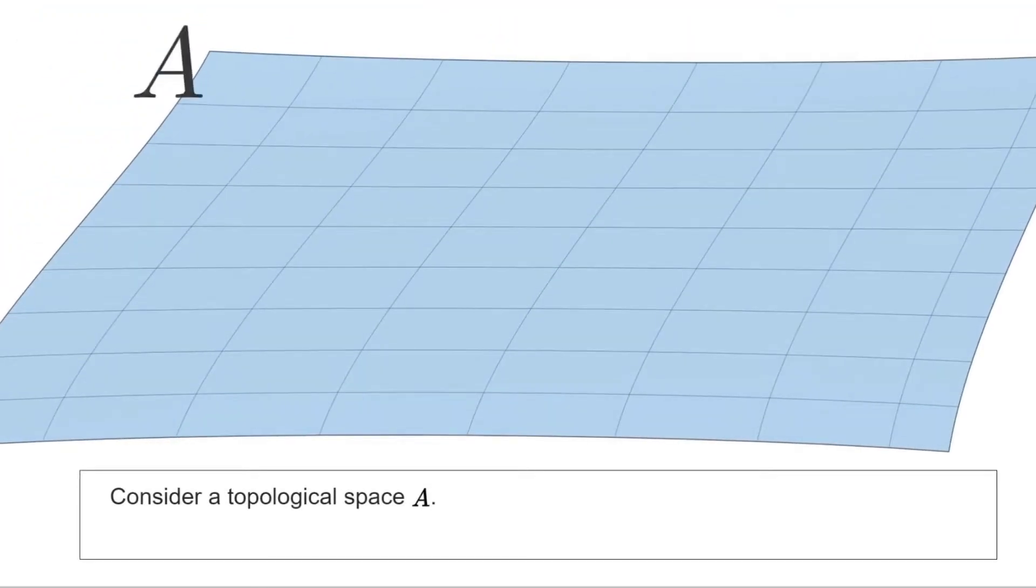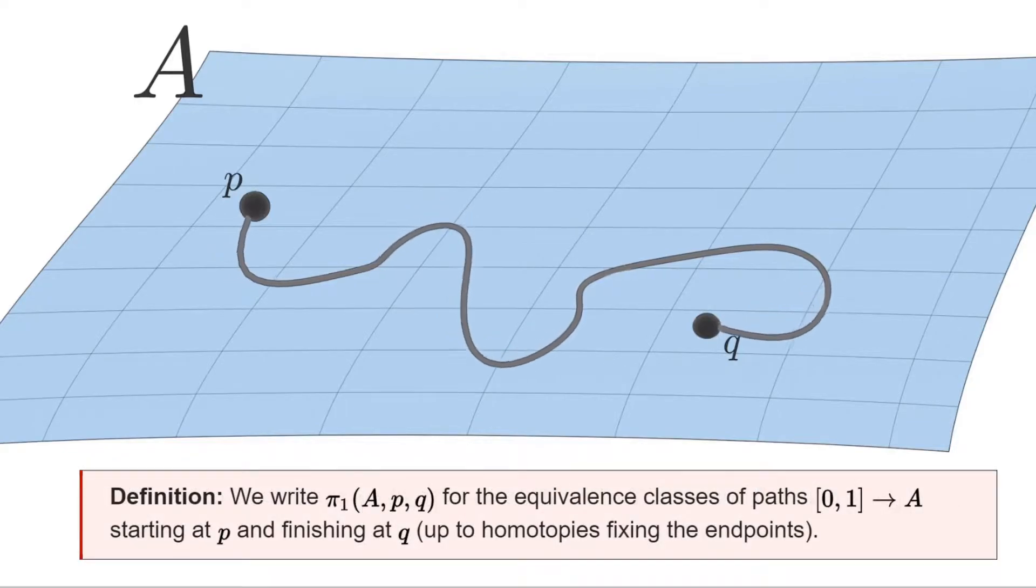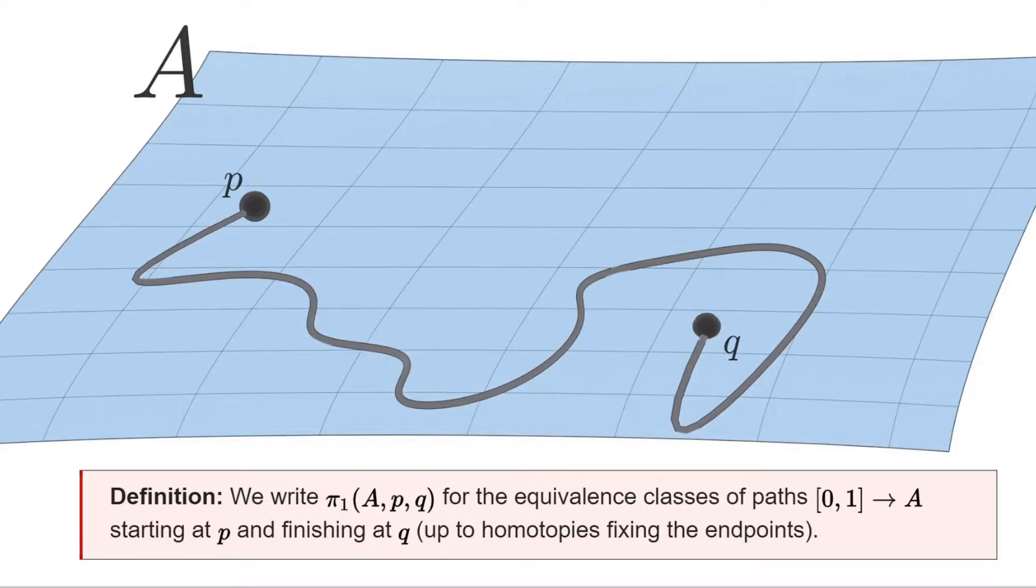Imagine we have a topological space A and there we fix two points P and Q. We may focus our attention on paths that begin at P and finish at Q. If two paths can be deformed into one another we want to regard them as being the same. Therefore the object we are interested in are the equivalence classes of paths with fixed endpoints up to homotopies that preserve those endpoints. We will denote the set of all those equivalence classes as π₁(A, P, Q).